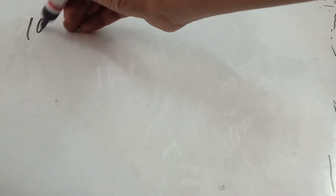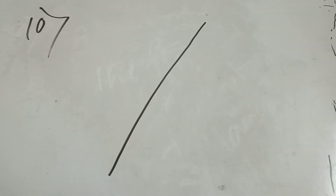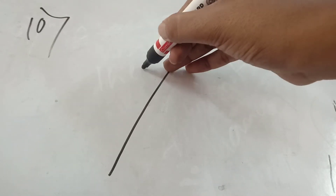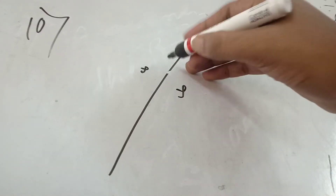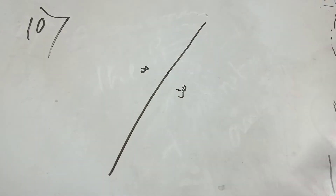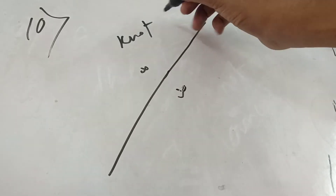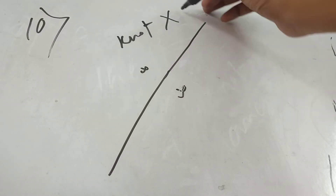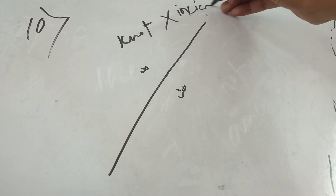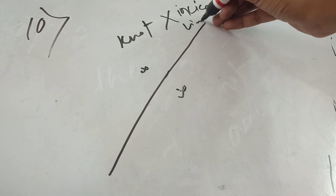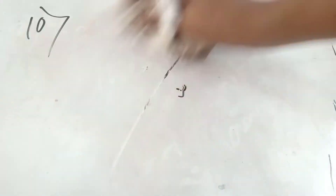Tenth principle: if this is the incision line, your knot will be placed to one side or the other, but not on the incision line itself. The knot must not be placed on the incision line.